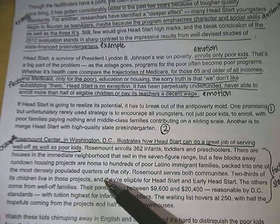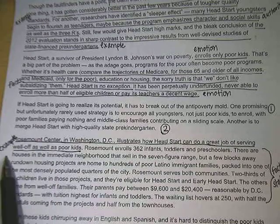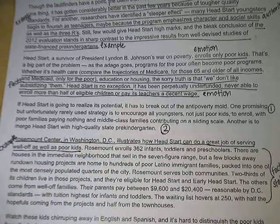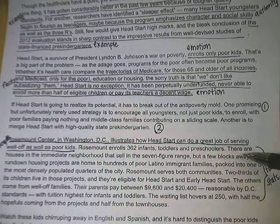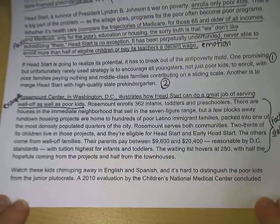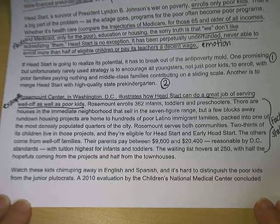In the paragraph above we had our two reasons, and so these are now examples of a Head Start program that is successful. Rosemont Center, the first sentence, is an example of why Head Start can work. After that, all the sentences giving details and facts about the program are the facts and statistics.